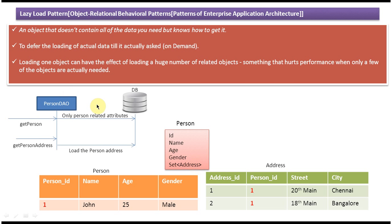When a request comes to the person DAO calling get person, as per the lazy load design pattern, we load only person-related attributes — ID, name, age, gender — and we should not load the dependent objects. Since the request is only for person information, not address information, the set of addresses will be null.